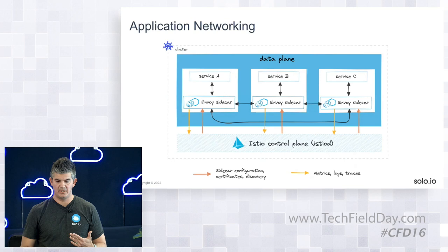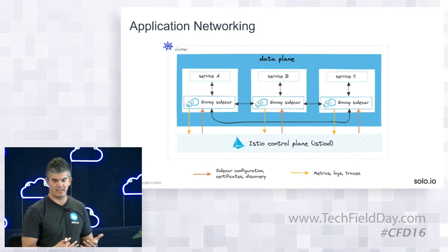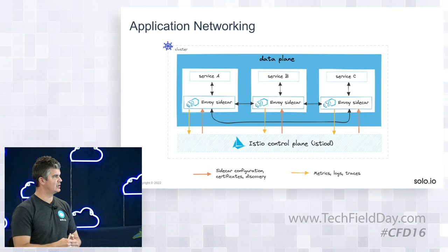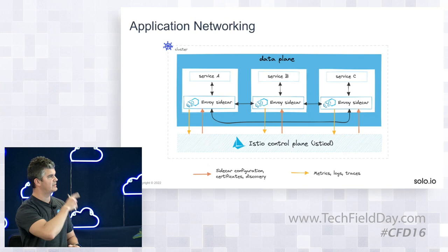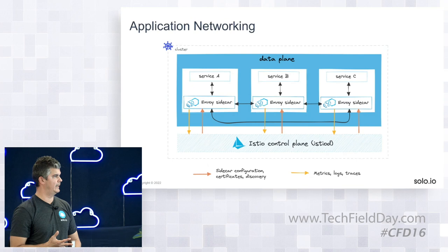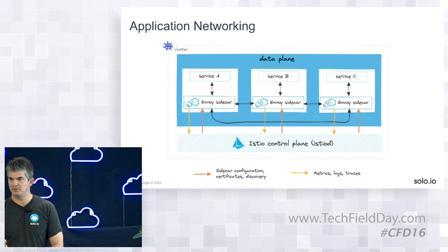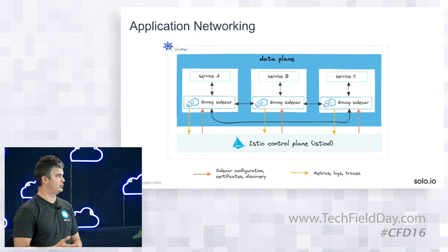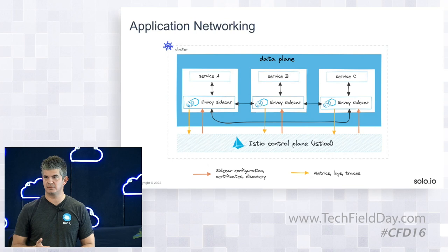This is what a service mesh looks like — this is an Istio service mesh. Service A is deployed with a proxy as a sidecar. This sidecar implements the application networking behavior. When service A wants to talk to service C, it'll first go through the proxy. The proxy will collect telemetry — how many requests per second are going through — and route the traffic to healthy instances of service C. The service mesh can do discovery, understand what endpoints are healthy and available. It can originate TLS or mutual TLS, and send tracing information to an observability system like Jaeger or Zipkin.